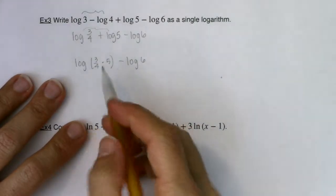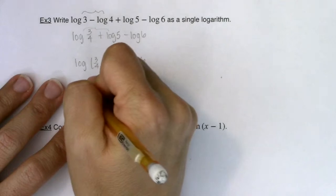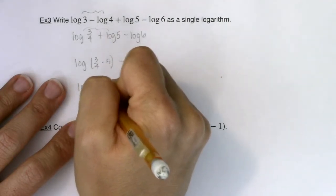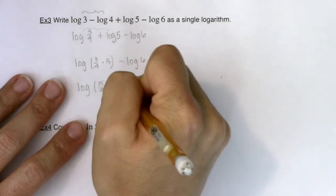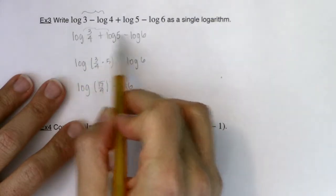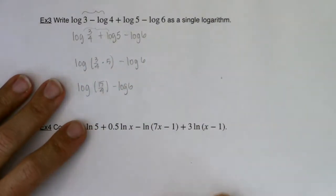Okay. So I'm getting better. Now 3 fourths times 5, that's 15 fourths. So let me go ahead and just simplify that some more. So I have log of 15 fourths minus log of 6. So again, I had four logarithms. I simplified it to three logarithms. I'm down to two logarithms, but I need that single logarithm.